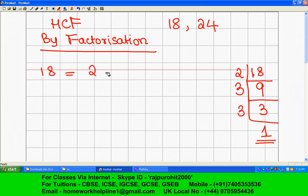of 18? Two multiplied by 3 multiplied by 3. These are the factors of 18.